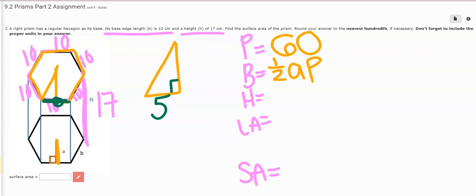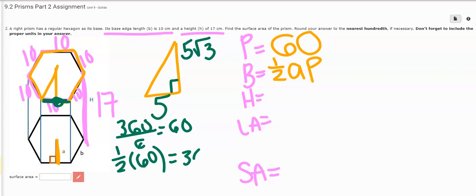So you can memorize when it's a hexagon, you just add on a radical 3. Or you can go through and you can derive that every single time. And 360 divided by 6 is equal to 60 degrees. Half of that 60, half of that central angle is going to be equal to 30. So I have a 30, 60, 90 degree triangle.